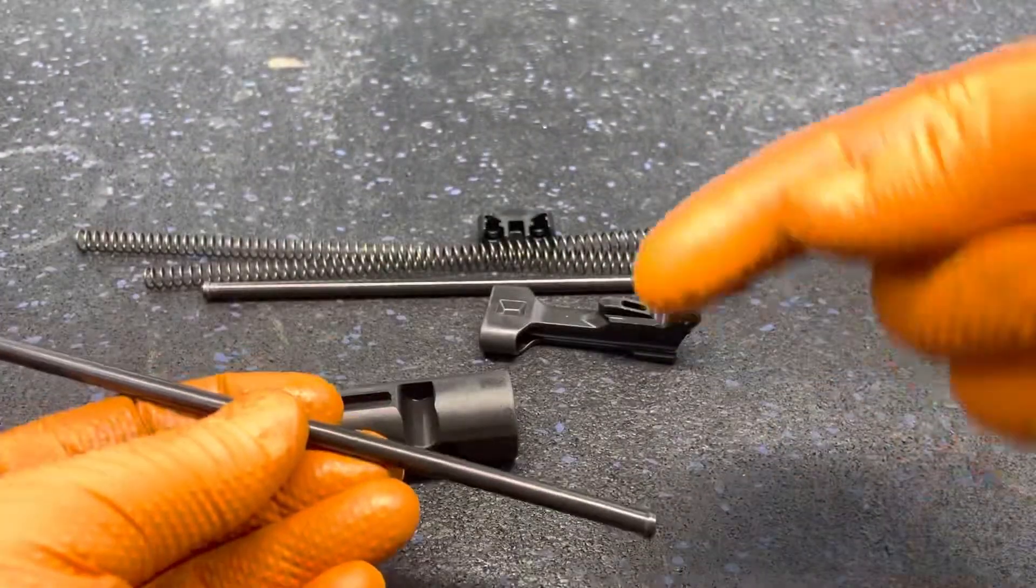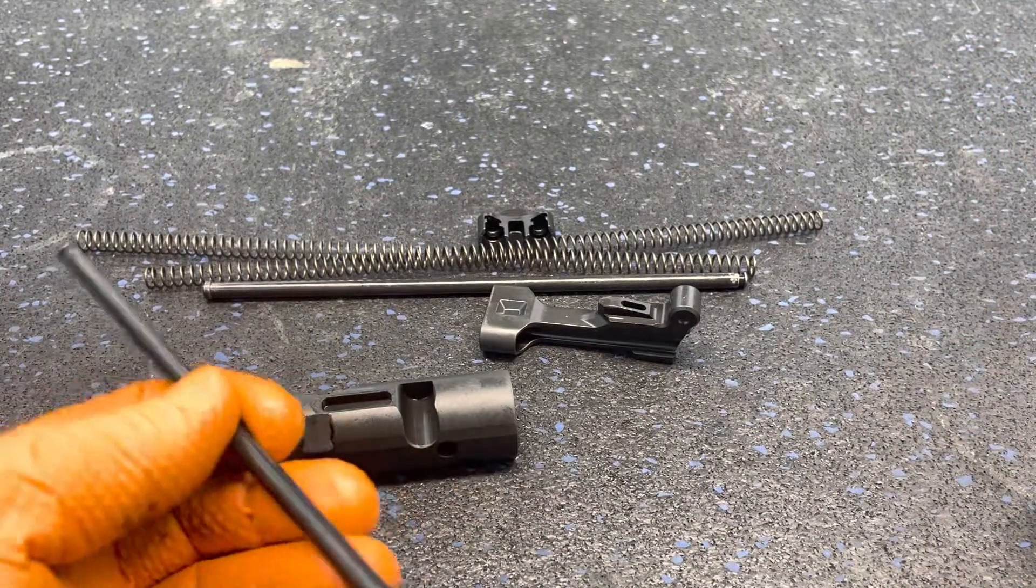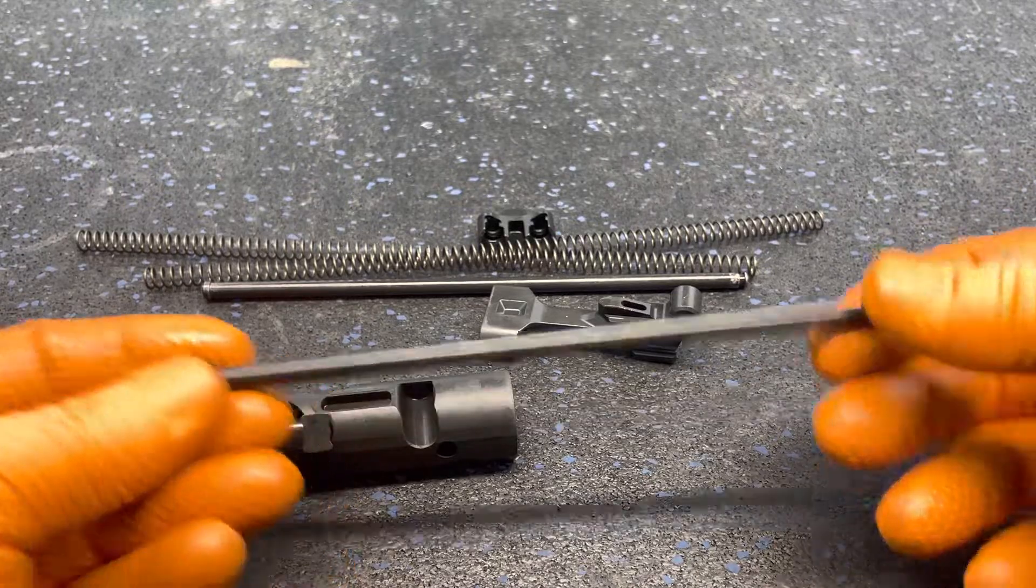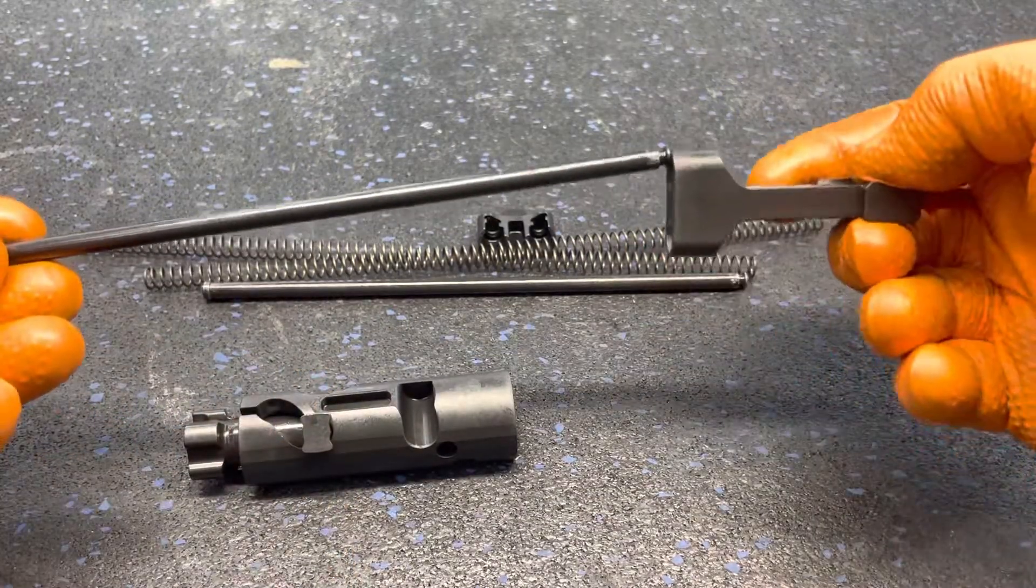Before reinstalling the recoil spring guide rods, I give them also a light wiping with the high temp anti-seize. That's all the lubrication I use on them.